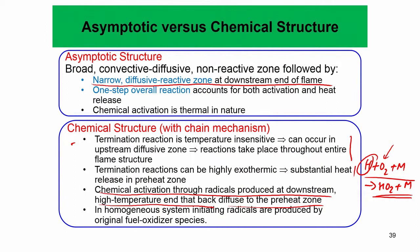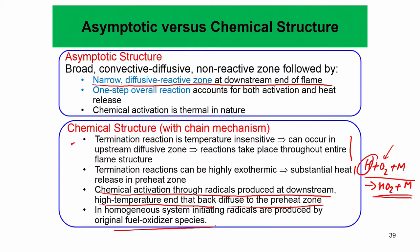In homogeneous systems, radicals are produced by the original fuel-oxidizer species, so the initiation reaction for a flame and for a homogeneous system can be very different. That is what makes understanding this chemical structure very important.